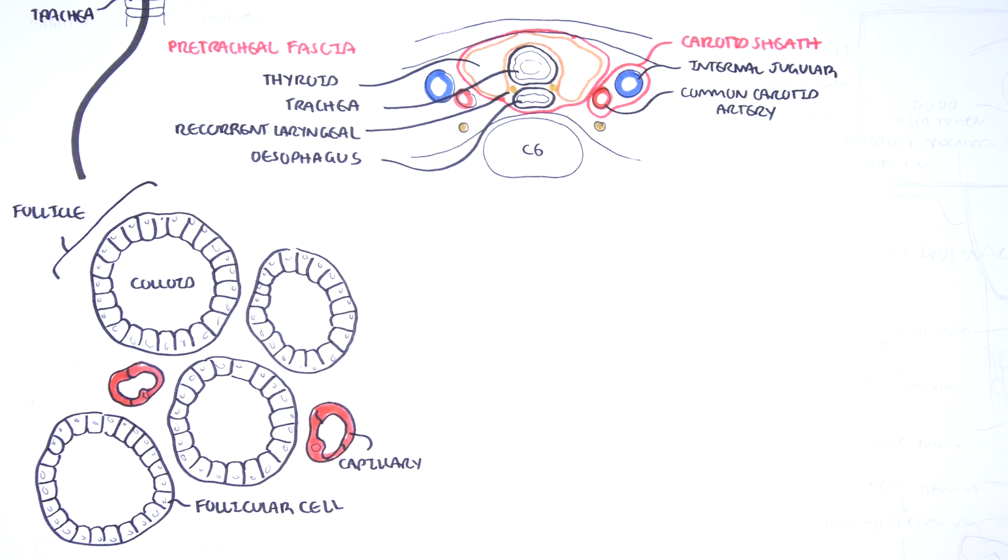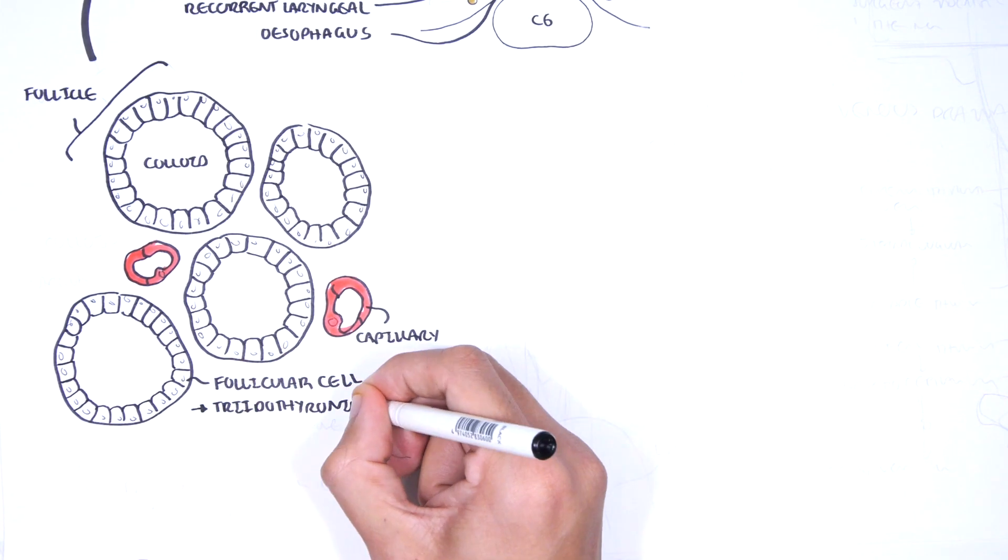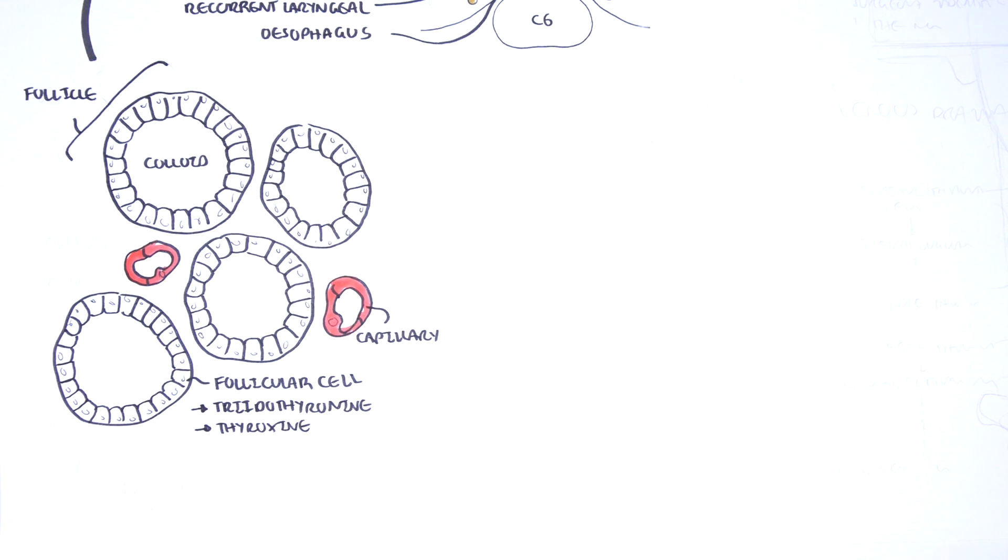Surrounding the follicles are capillaries. These follicular cells produce the classical thyroid hormones, thyroxine and triiodothyronine. The production of these hormones in the colloid rely on iodine.